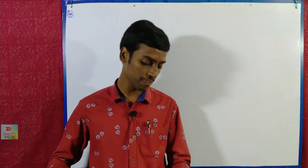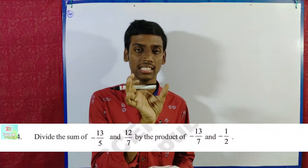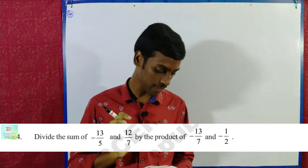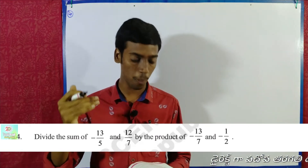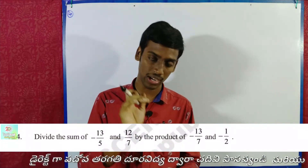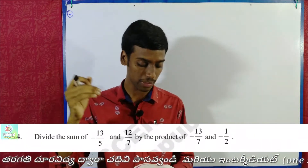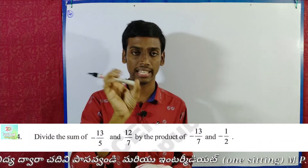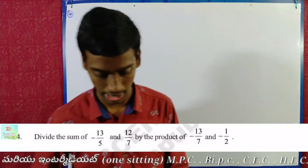This question has minus 13 by 5 and 12 by 7 in the numerator. Next, minus 13 by 7 and minus 1 by 2 — this is in the denominator.